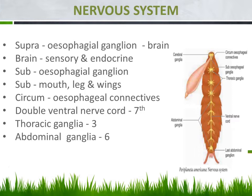Overall, nine ganglia are present other than the supra and subesophageal ganglia. Among these, three ganglia are located in the thoracic region — noted as thoracic ganglia — and the remaining six ganglia are located in the abdominal region, noted as abdominal ganglia. From these ganglia, nerves are supplied to the body. That is all about the nervous system of cockroach.